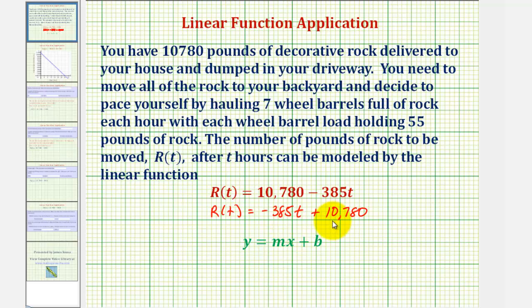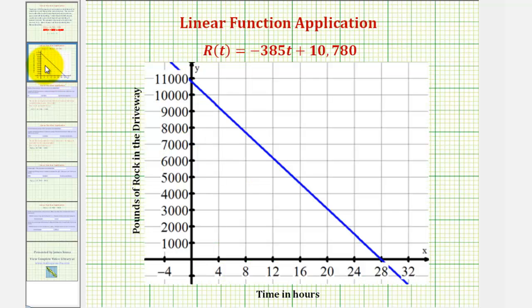So if we graph this function on the coordinate plane, it would look like this, where the horizontal axis is the time in hours and the vertical axis is the pounds of rock in the driveway. Notice as t increases, the number of pounds of rock in the driveway decreases. Therefore, we have a decreasing linear function.